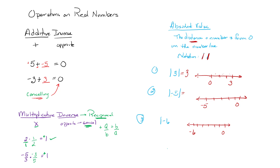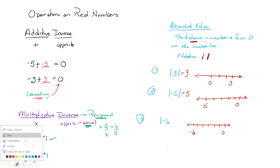Let's look at the absolute value of negative 5. Again, looking at the number line, it doesn't matter if I start at 0 and count to negative 5 or go backwards — I still get 1, 2, 3, 4, 5 spaces. The absolute value of negative 5 is just 5. Regardless of the direction I count, I'm still going to get a positive 5 because distance is positive.